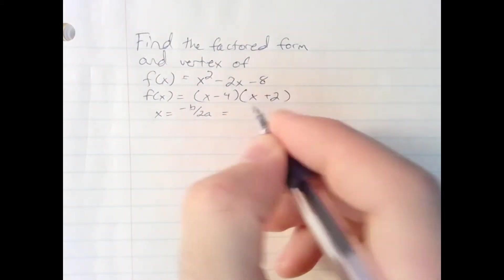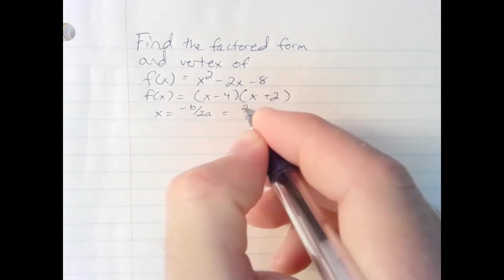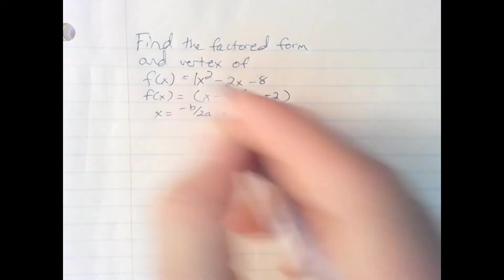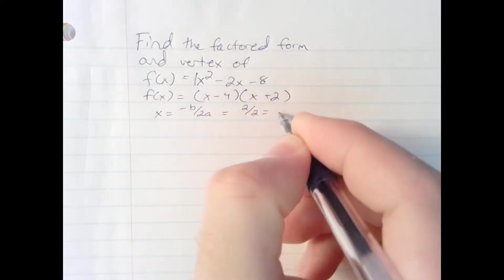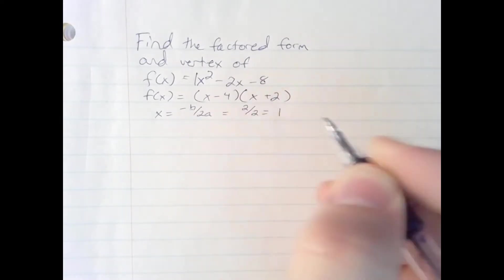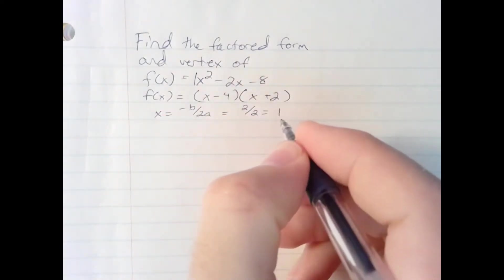The b number is negative 2, so negative that would be positive 2. 2 times a is 2 times 1, which is 2, which is 1. There's the x-coordinate of the vertex, 1.